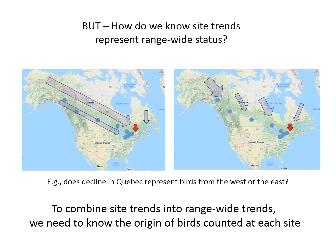If all of those birds were passing through the site where there was a decline in the east, then that station in the east represents a huge portion of the population and the species may actually be declining severely.